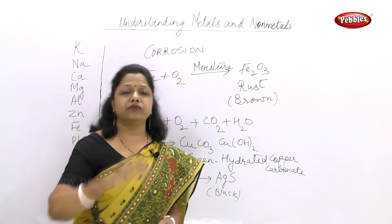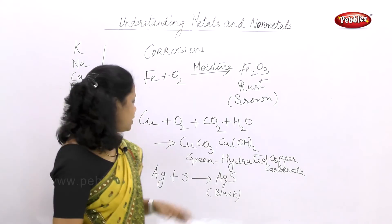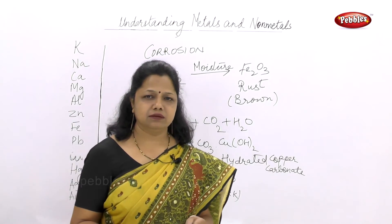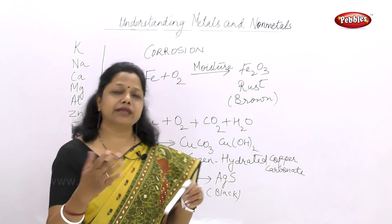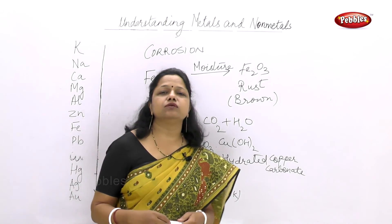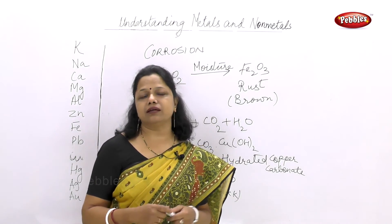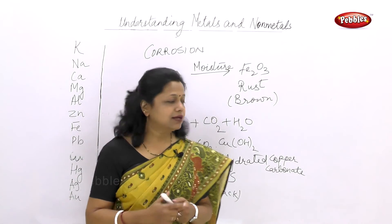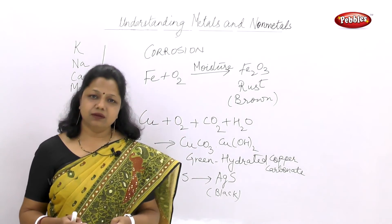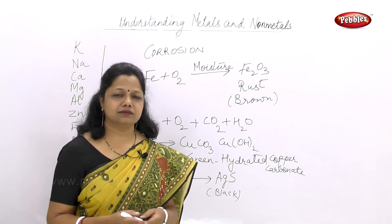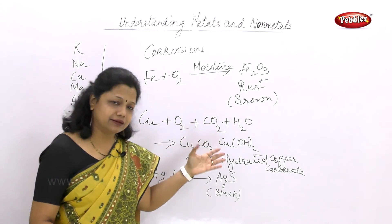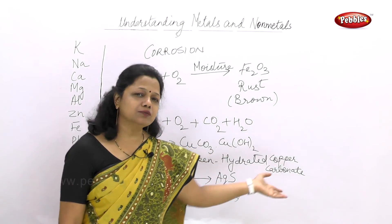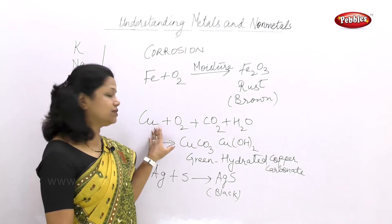This corrosion can be prevented. At home, if the copper vessel has a greenish colour, what does your mom do? She will use lemon, she might use tamarind, or some other mildly acidic substance. Why? Because lemon and tamarind contain natural acids. When these natural acids react with the green coating, the carbonate comes out, and the copper vessel shines again.